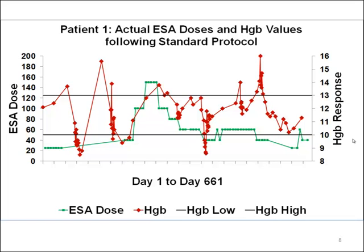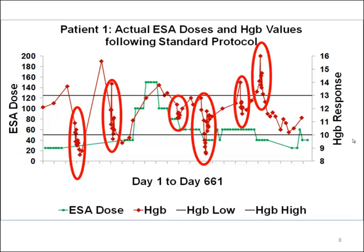I'm going to show you a number of charts structured this way: on the left-hand vertical axis is the ESA dose, and the right-hand axis is the hemoglobin response. Actual historical ESA doses are shown in green and hemoglobins are shown in red. The two black lines are hemoglobin values ranging from 10 to 13, which was the target range. Looking at this patient over a 661-day period, we see a number of excursions above and below the target range. We see clusters of hemoglobin measurements taken closely in time, meaning the patient was most likely hospitalized six times in a 22-month period. We also see large increases in hemoglobin values, most likely where the patient was being transfused. The message in the chart: this patient is not doing well during this almost two-year period.